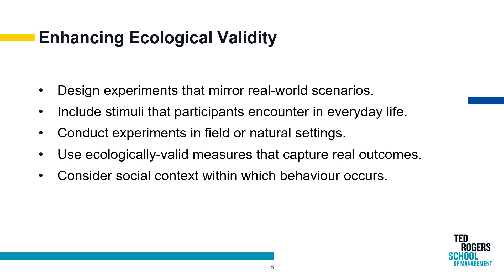Finally, enhancing ecological validity in experimental design involves deliberate strategies to align experimental conditions with the intricacies of real-world scenarios, ensuring that study outcomes reflect the complexities of the broader environment. One fundamental approach is the replication of real-world scenarios within the experimental design. By closely mirroring authentic situations, researchers create conditions that simulate the challenges and dynamics participants would encounter in their day-to-day lives, thereby fostering a more authentic response reflective of real-world situations. The incorporation of real-world stimuli is another key strategy. Actively including stimuli that participants encounter in their daily lives adds a layer of authenticity to the experimental setting, eliciting responses that are more representative of genuine reactions in real-world contexts.